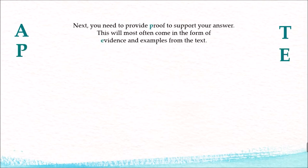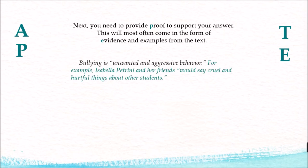The next part is the evidence or the proof, and this should come from your text. Just like the topic sentence used text to define bullying, we're also going to use evidence and examples from the text to support our answer. For example: 'Isabella Petrini and her friends would say cruel and hurtful things about other students.' That's an example from the text that shows what bullying is, and it uses text evidence, which you can see within the quotation marks.